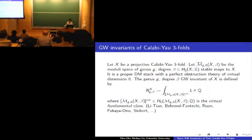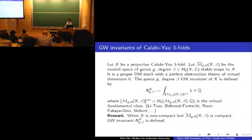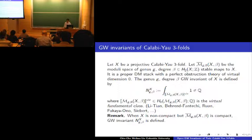I would like to remark that the construction of this virtual fundamental class relies on two things: the virtual tangent bundle and the compactness of the moduli space. If your X is a non-compact Calabi-Yau threefold, this moduli space still has a virtual tangent bundle of rank zero, but the moduli space might not be compact. However, suppose that for some particular genus g and degree beta this moduli space is compact. Then you can still define the Gromov-Witten invariant for that particular genus and degree.